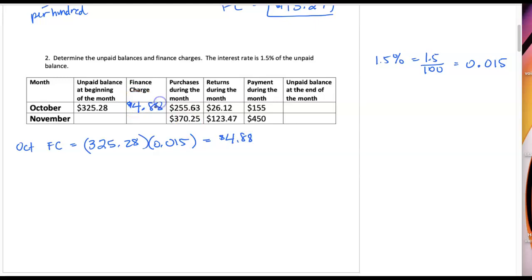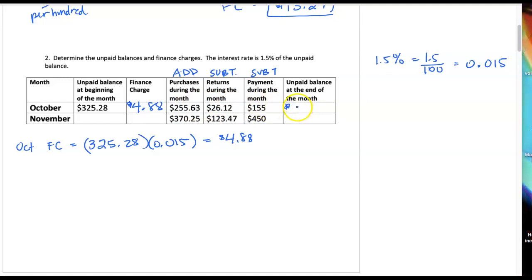Calculate the October finance charge by taking the unpaid balance at the beginning times the decimal equivalent 0.015, and I get a finance charge of $4.88. That goes in the first blank. Then when we make purchases with our credit card we're going to add purchases and subtract anything that was returned, because that's money that gets deducted from what you owe. We're also going to subtract any payments that are made, again lowering the balance of your credit card. So we take the previous balance of $325.28, add the finance charge of $4.88, add our purchases, subtract any returns, and subtract any payments. At the end of October I have an unpaid balance of $404.04.